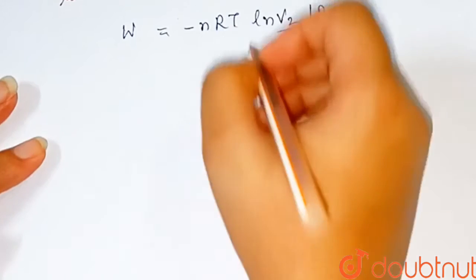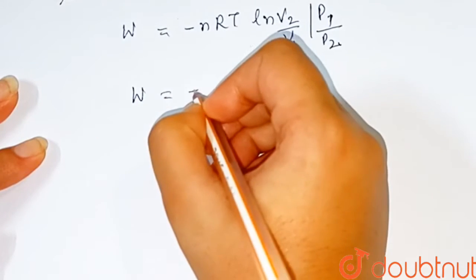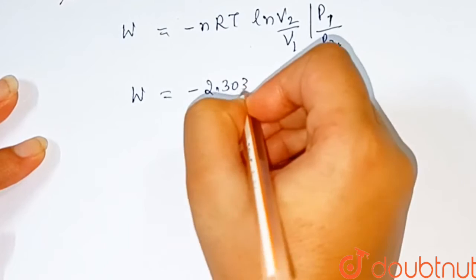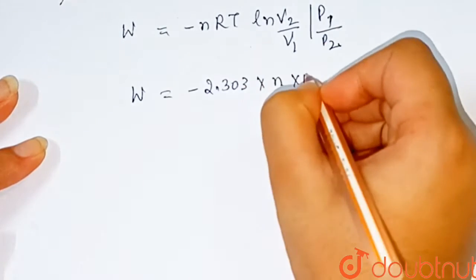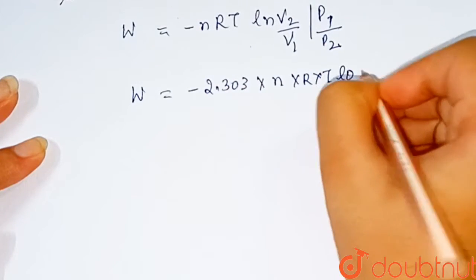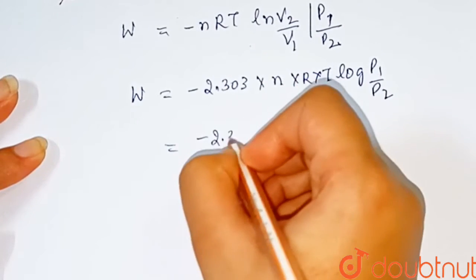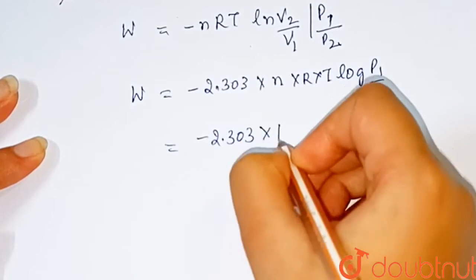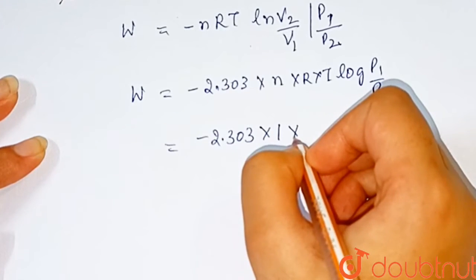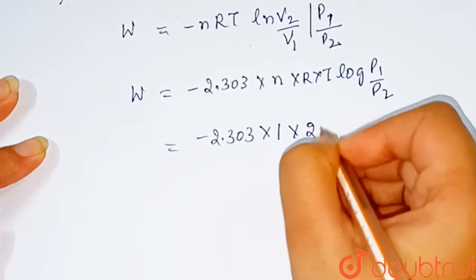In log terms, write the formula: W equals minus 2.303 times n times R times T log P1 upon P2. Here minus 2.303, n equals 1 because 1 mole of ideal gas is given, R is 2.